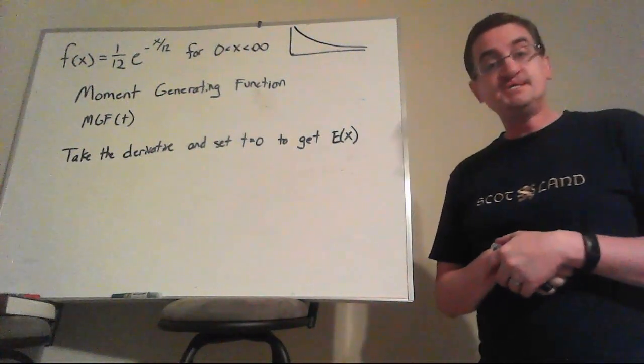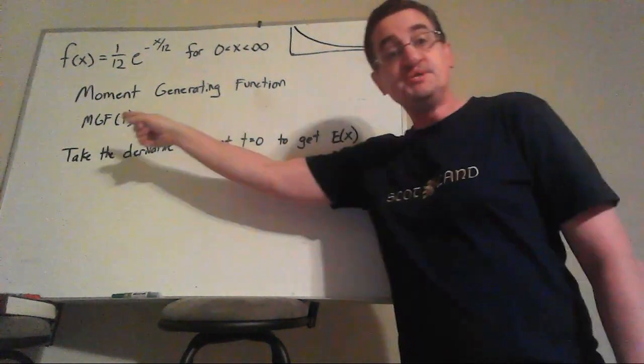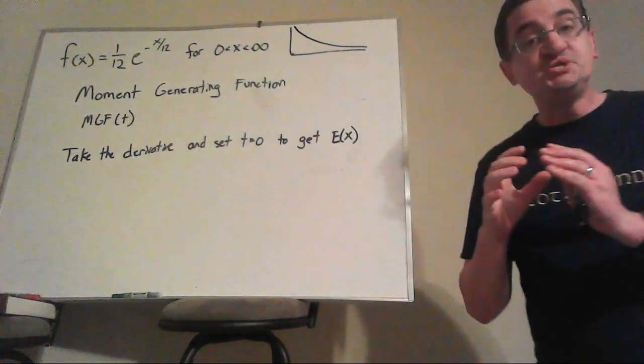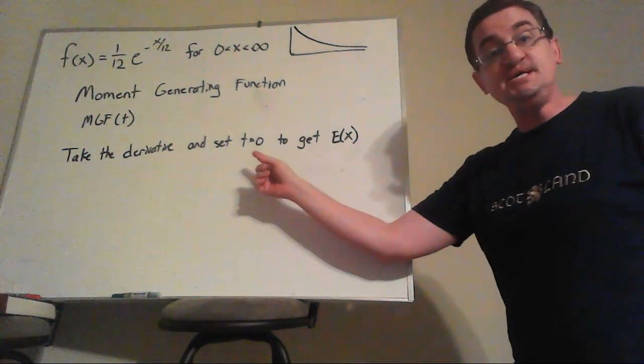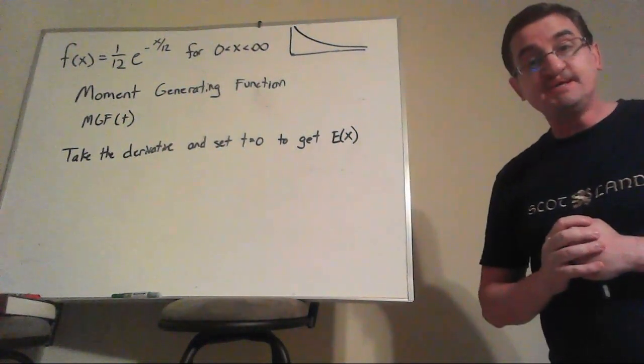So what we need is called a moment generating function. You'll notice it uses a t, and what we're going to do is take the derivative of this function, set t equal to zero, and that gives us the expected value of x.